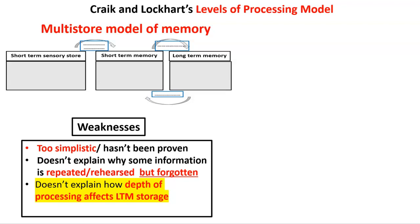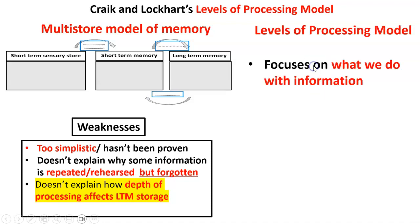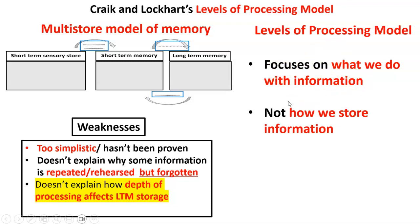What Craig and Lockhart were interested in — the focus of their model — was not about how we store information in order to remember it, which was the focus of the multi-store model. They were more interested in what we do with information to ensure we store it in our long-term memory. So specifically, the levels of processing model focuses on what we do with information, not how we store it.